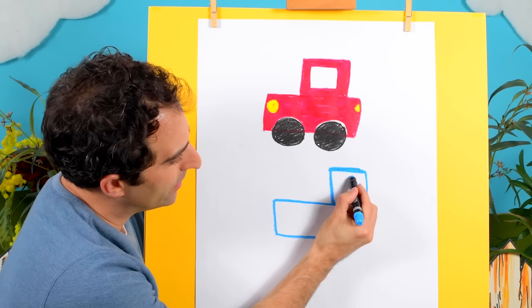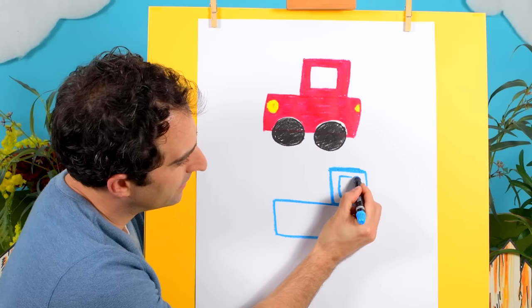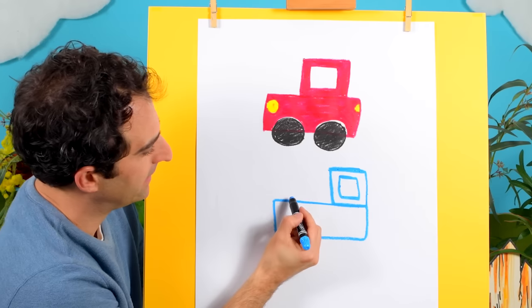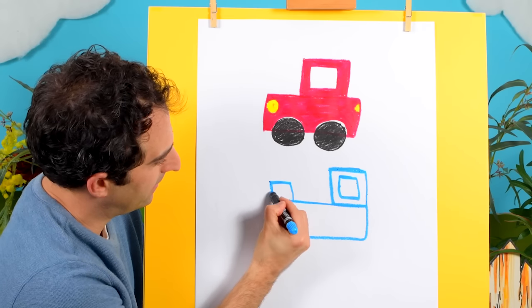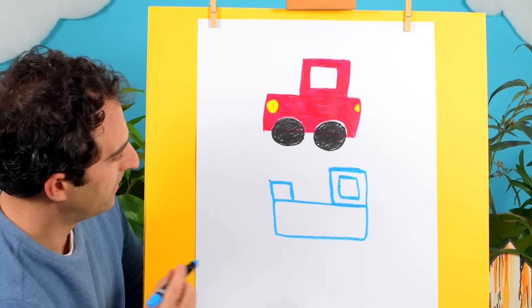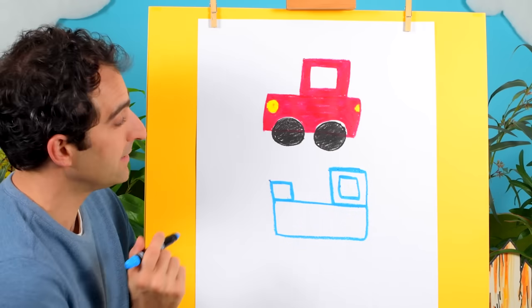And we can put a window in here. Just like that. And how about the front of the train? With a rectangle there, where the smoke will come out.